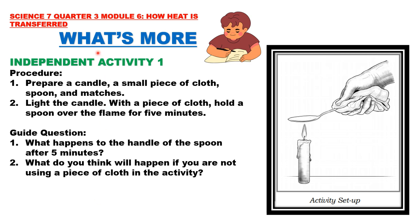Let us now discuss the different activities in What's More. Independent Activity 1. Procedure: 1. Prepare a candle, a small piece of cloth, spoon, and mattress. 2. Light the candle. With a piece of cloth, hold a spoon over the flame for 5 minutes. Make sure that you have adult supervision in doing this activity. Guide questions: What happens to the handle of the spoon after 5 minutes? And what do you think will happen if you are not using a piece of cloth in the activity?